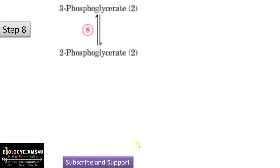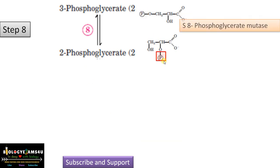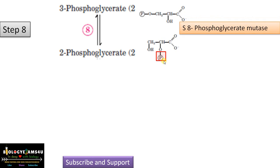Step 8: 3-phosphoglycerate is converted to 2-phosphoglycerate — just a shift in bond position, from the third position to the second position. The enzyme is phosphoglycerate mutase.